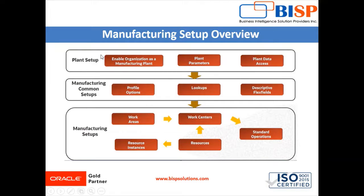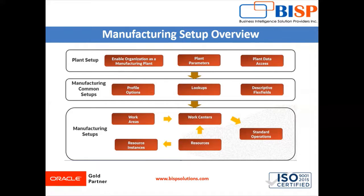In the plant setup, first of all we have to enable the organization as a manufacturing plant. The inventory organization always represents facilities for shipping and receiving of goods, and when this facility additionally manufactures goods, then you can define the organization as a manufacturing unit — it represents a manufacturing plant. After completing this process, the default parameters for the manufacturing plant can be set up and maintained independently of the inventory parameters.